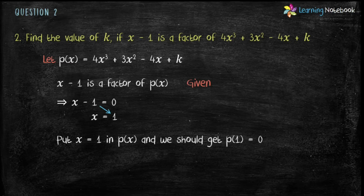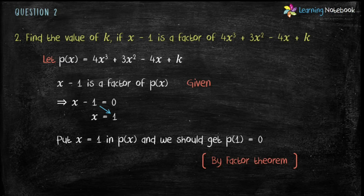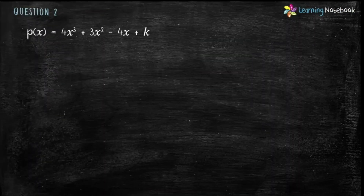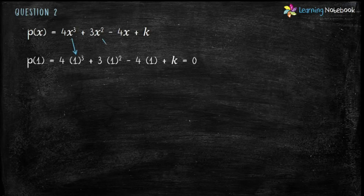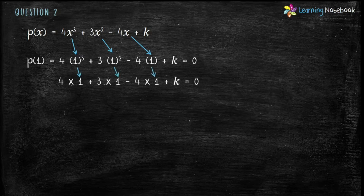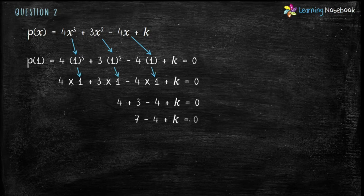Put x equals 1 in P(x) and we should get P(1) equals 0 by using Factor Theorem. At x equals 1: P(1) equals 4 into 1³ plus 3 into 1² minus 4 into 1 plus K equals 0, which gives 4 plus 3 minus 4 plus K equals 0. Solve it and we get 3 plus K equals 0. Therefore, K equals minus 3.